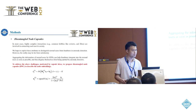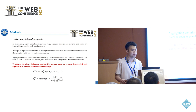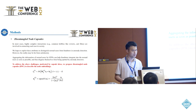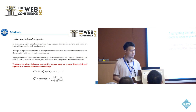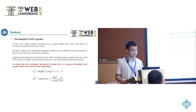The second component is the disentangled node capsules. In most cases, highly complex interactions — for example, common hobbies like reviews and films — are involved in connecting each user. We hope to exploit these attributes to distinguish normal users from fraudsters. However, aggregating information of normal users by GNNs can help fraudsters ingratiate themselves into the normal population, disguising themselves from being spotted by anomaly detectors. Motivated by capsule ideas, we propose disentangled node capsules to describe the node embeddings.